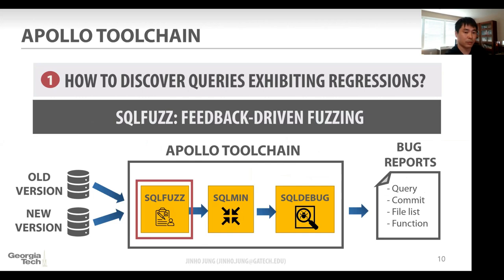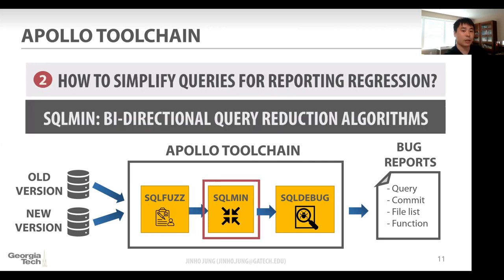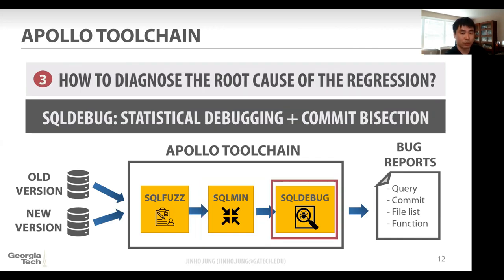To tackle the problem, we propose the Apollo system. Our system accepts database connections from at least two versions of a database — an old version and a new version. To tackle the first problem of discovering queries with regression, we introduced a SQL Fuzzer component with feedback-driven fuzzing. To answer how to minimize the query, we introduced a SQL Minimizer using a bidirectional query reduction algorithm. To diagnose the problem automatically, we introduced a SQL Debugger, which combines statistical debugging and commit bisection.